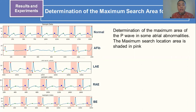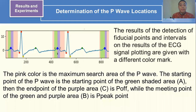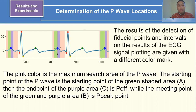From the plot, the maximum search location area is shaded in pink. In the determination of the P-wave location, the pink color indicates the maximum search area. The starting point of the P-wave is the starting point of the green shaded area E, then the endpoint of the purple area C is P-offset, while the meeting point of the green and purple area P is the P-peak point.